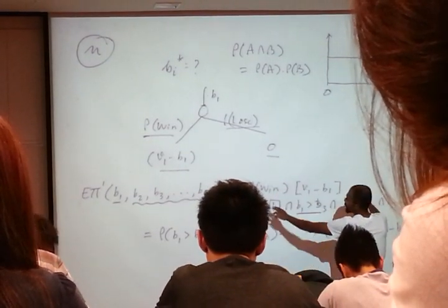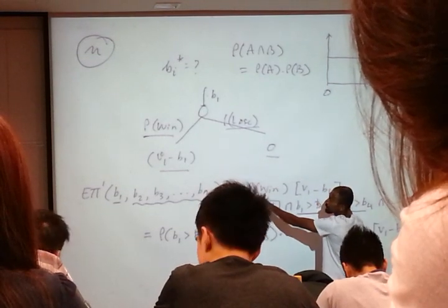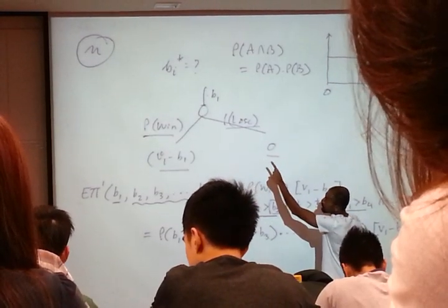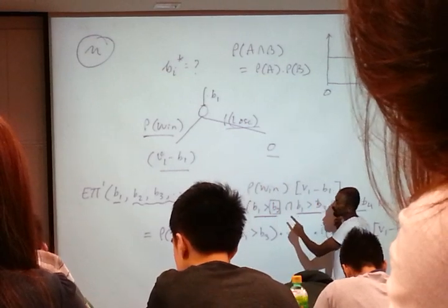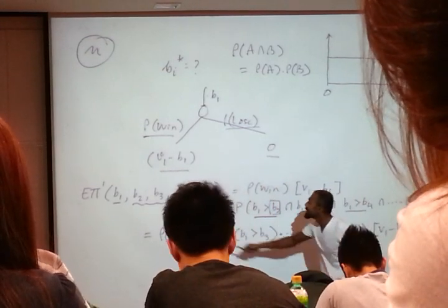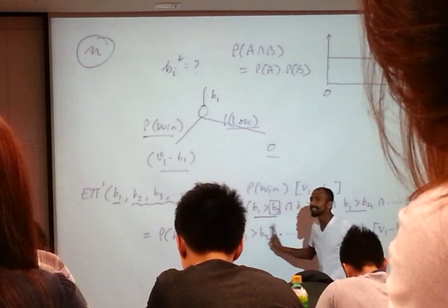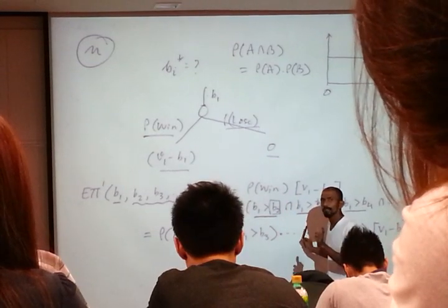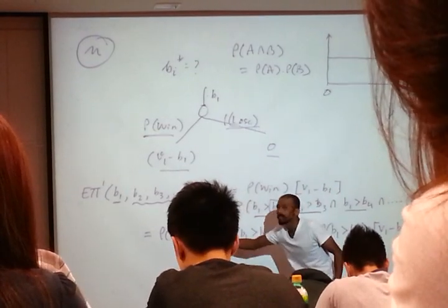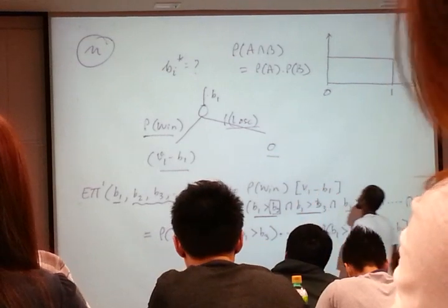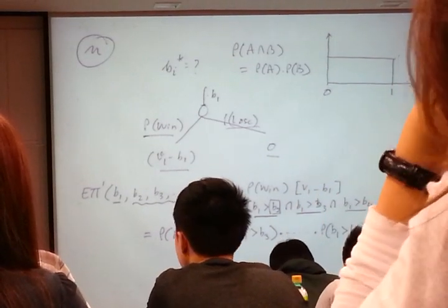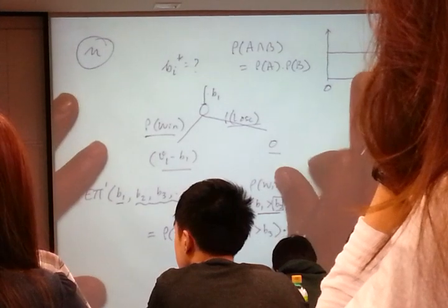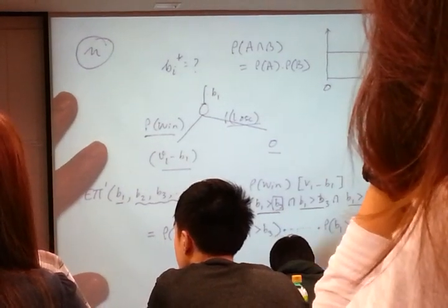Remember, after I get this expression, my job will still be the same. I will differentiate this function with respect to B1, set it equal to 0, and solve for B1 star. Therefore, I need expressions for this. I need functions for these. Otherwise, I can't differentiate. I need functions for it. The only way to get these functions is to go back to a uniform distribution of valuation.